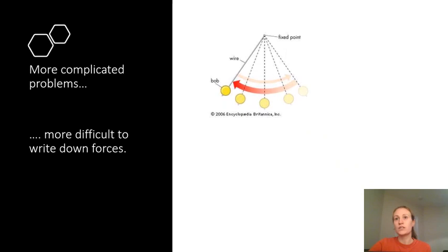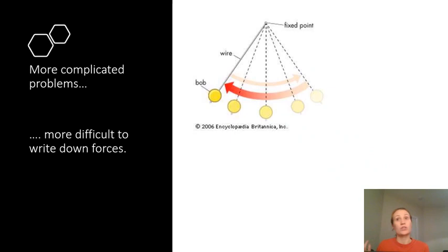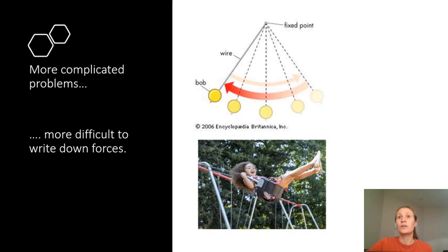Now, if you do Leaving Cert physics, you'll learn about something called the pendulum. And that's made up of a weight hanging on a wire or a string. The weight experiences two forces. It experiences the force of gravity pulling it down, and it experiences a force from the wire or string, which is holding it up. And you can write down equations using the laws of motion from Newton that describe how the weight will swing over and back. But things get more complicated if you introduce more forces.